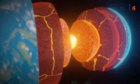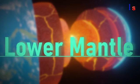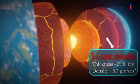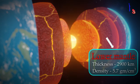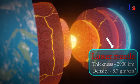Now let's talk about the next layer of the Earth, the lower mantle. The volume of this layer is approximately more than half of the total volume of the Earth. This layer extends to about 2900 km below.